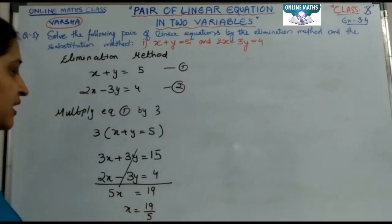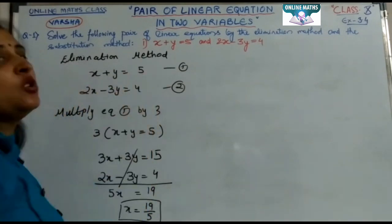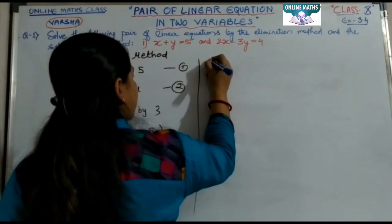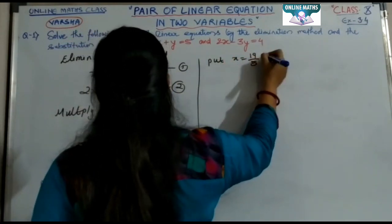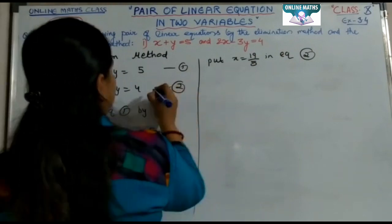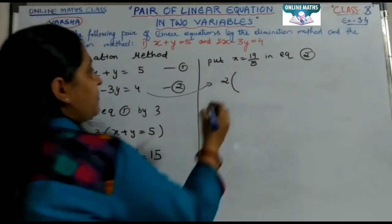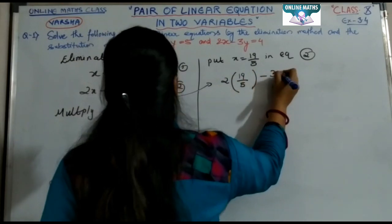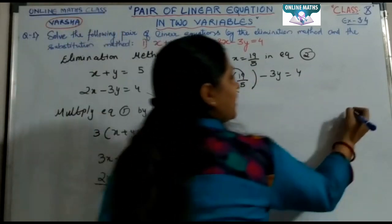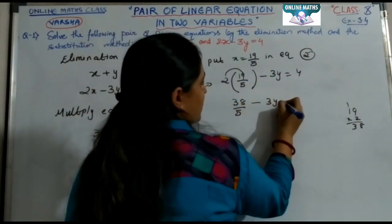Here we have 5 into x, so dividing both sides by 5 gives x equals 19 by 5. So the value of x has been found. Now substitute this into any equation — either equation one or equation two. Put x equals 19 by 5 in equation two: 2 times 19 by 5, minus 3y equals 4. That gives 38 by 5 minus 3y equals 4.